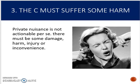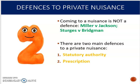The final requirement for private nuisance is that the claimant must suffer some harm. This makes it different from trespass to land, which is actionable per se — private nuisance is not actionable per se. You must be able to show some damage, harm, injury, or inconvenience. For example, if you can't sleep due to noise, that will demonstrate inconvenience.